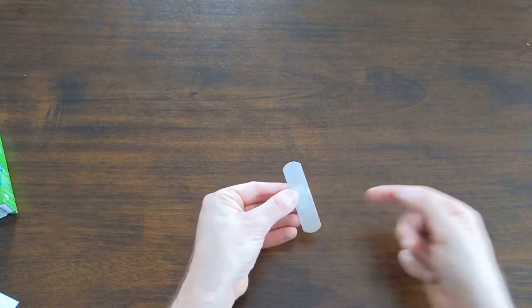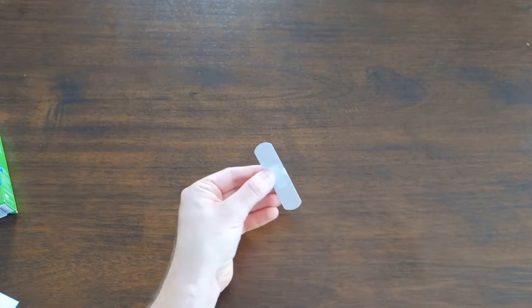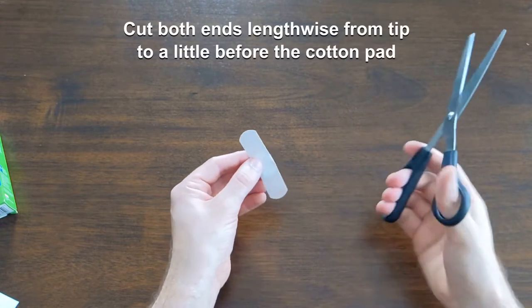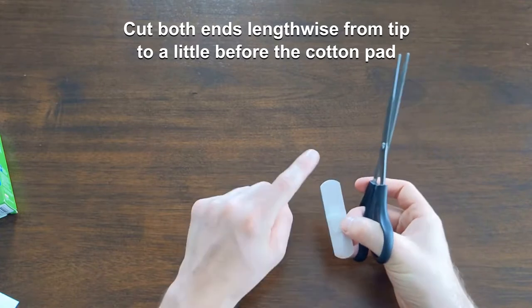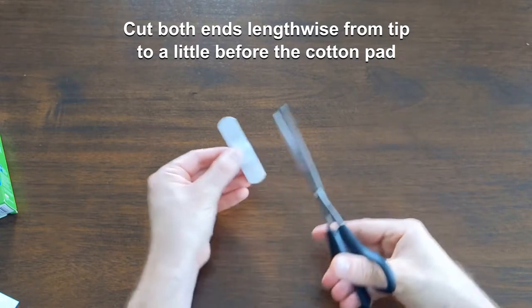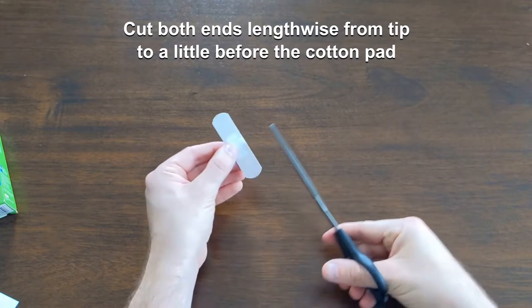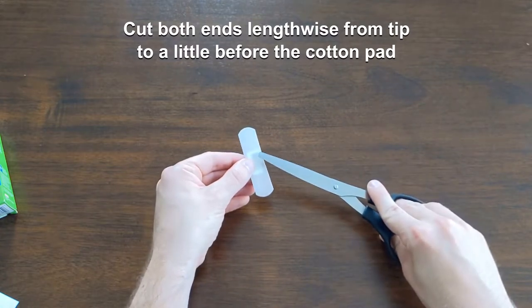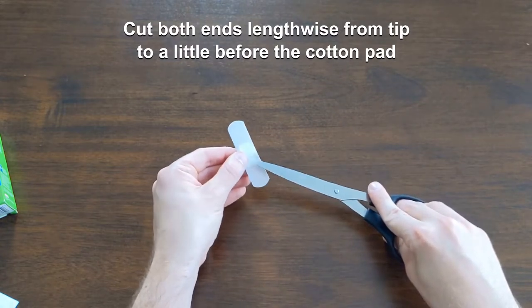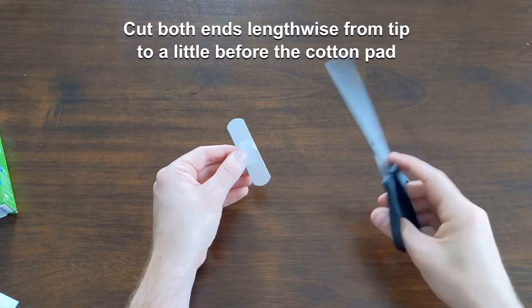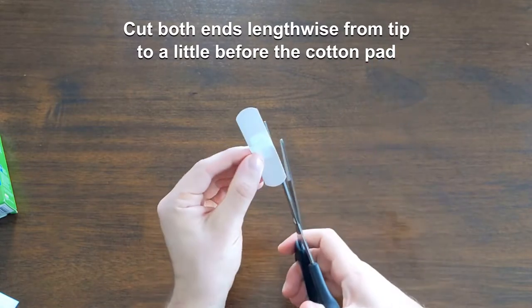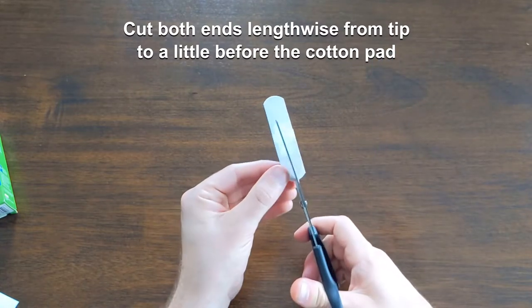And then what we're going to do with the backing still on, you want to grab a pair of scissors, and what you can do is you can cut up on either end. And we want to get pretty close to the dressing as possible, but you do want to save a little bit of room between the edge of the dressing and the cut that you're making.